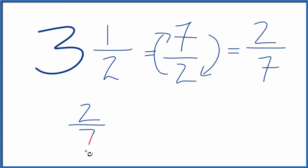We take 2 over 7, that's the reciprocal. If we multiply that times the original number, 7 over 2, it should equal 1.